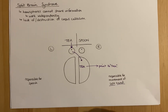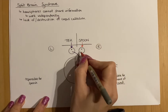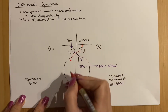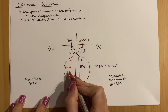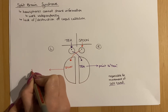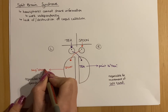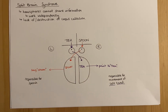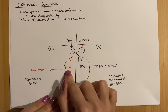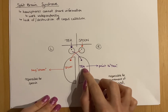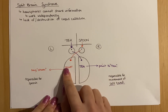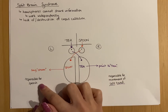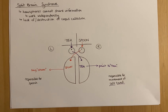The right eye sees the word 'spoon', sending impulses to the left hemisphere. Because the left hemisphere is responsible for speech, the person would say 'spoon'. In a normal person with an intact corpus callosum, the brain would connect both words together and they would say 'teaspoon'. But this person without a corpus callosum cannot share information between hemispheres, so they would not point to spoon and would not say tea.